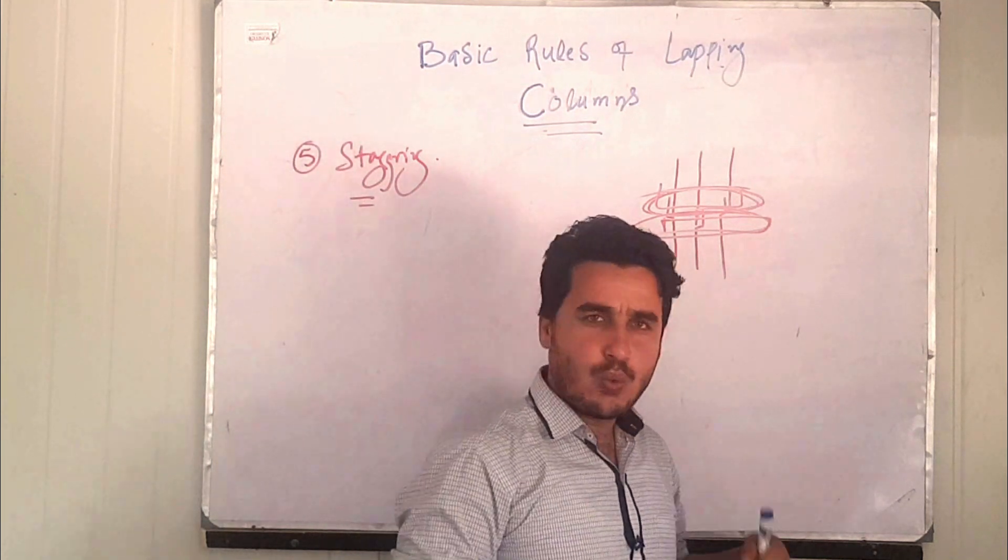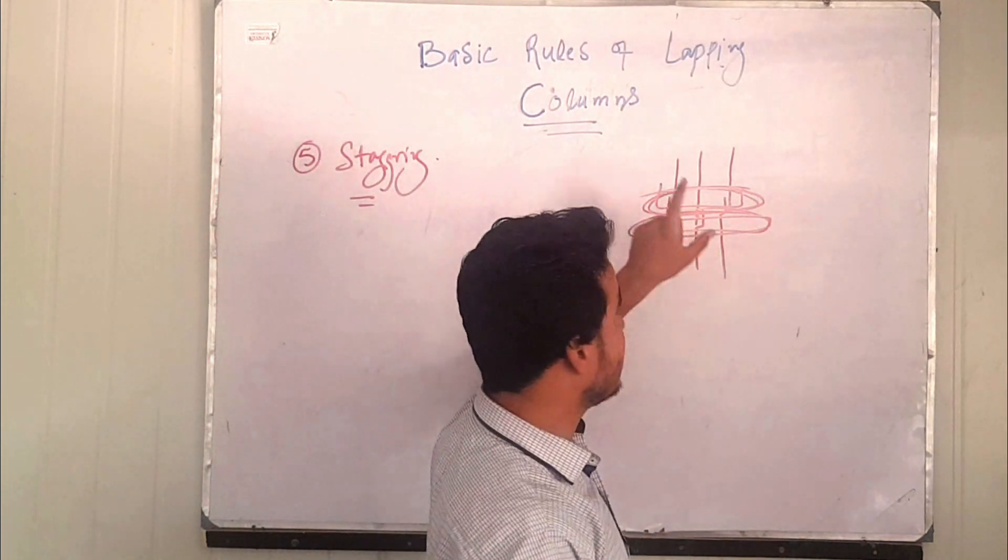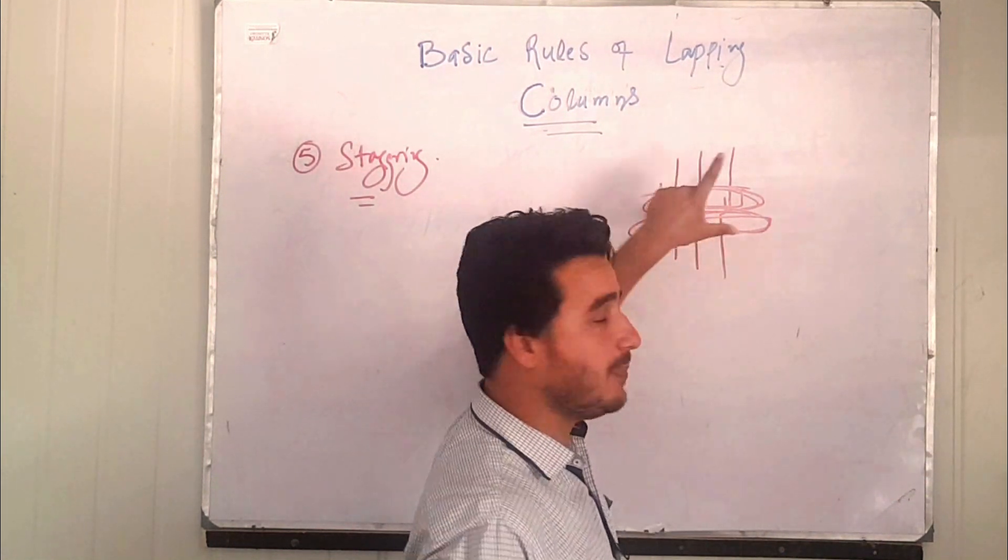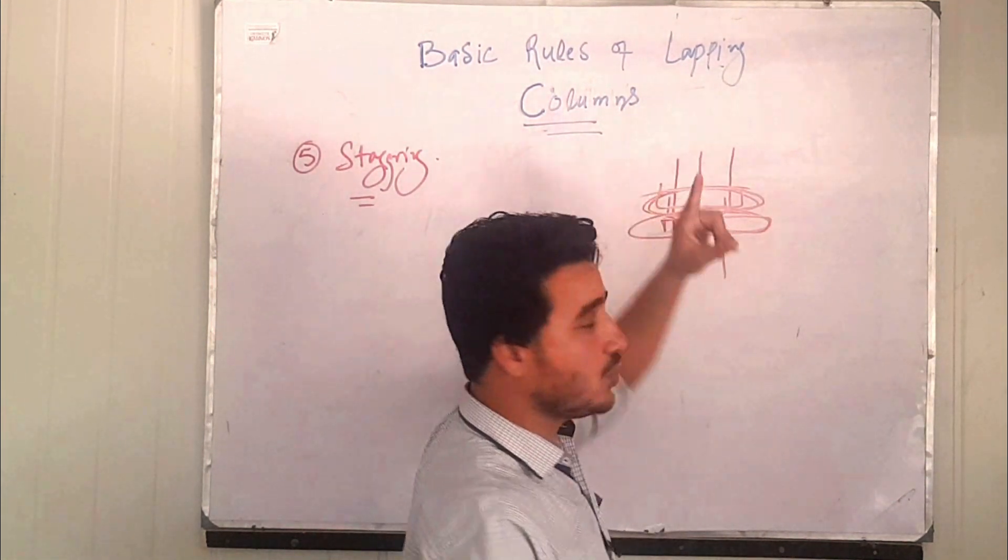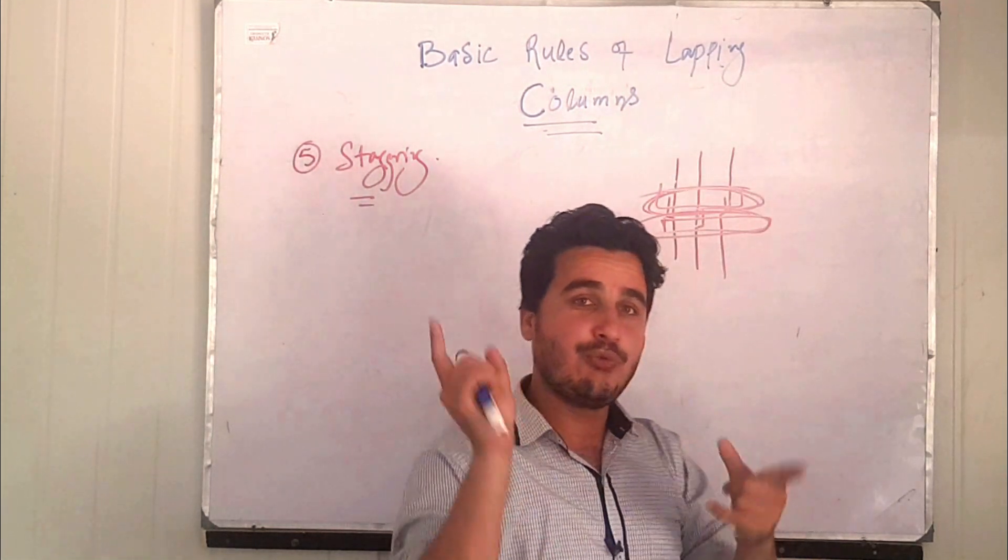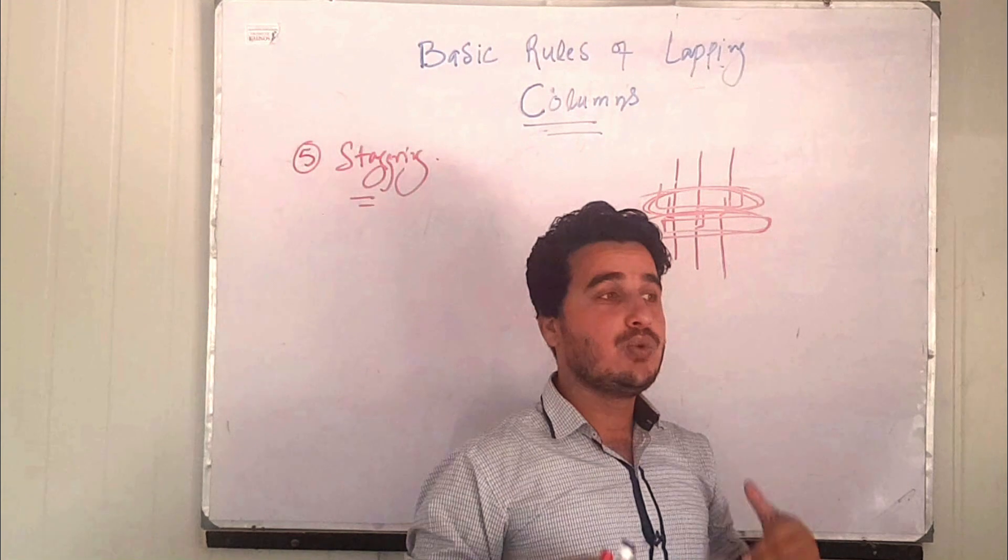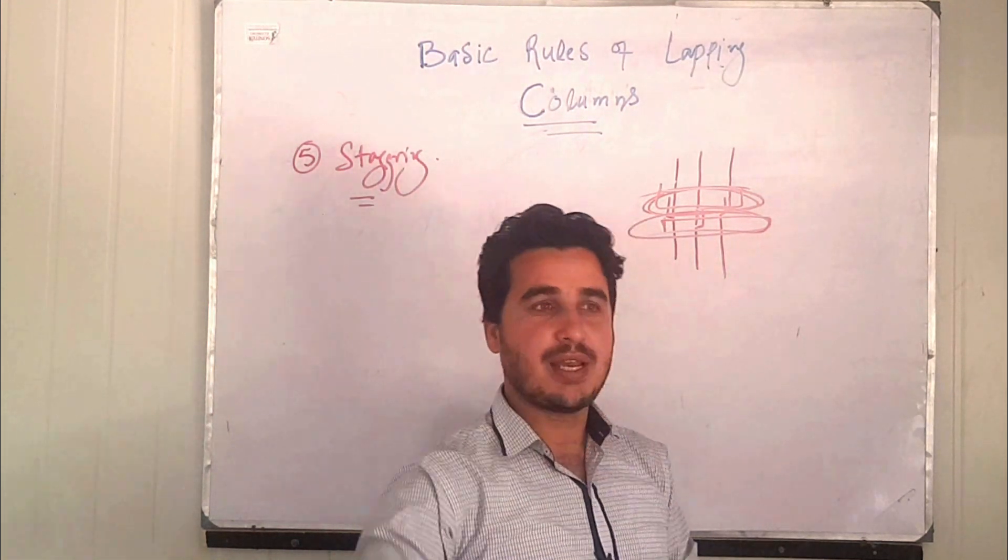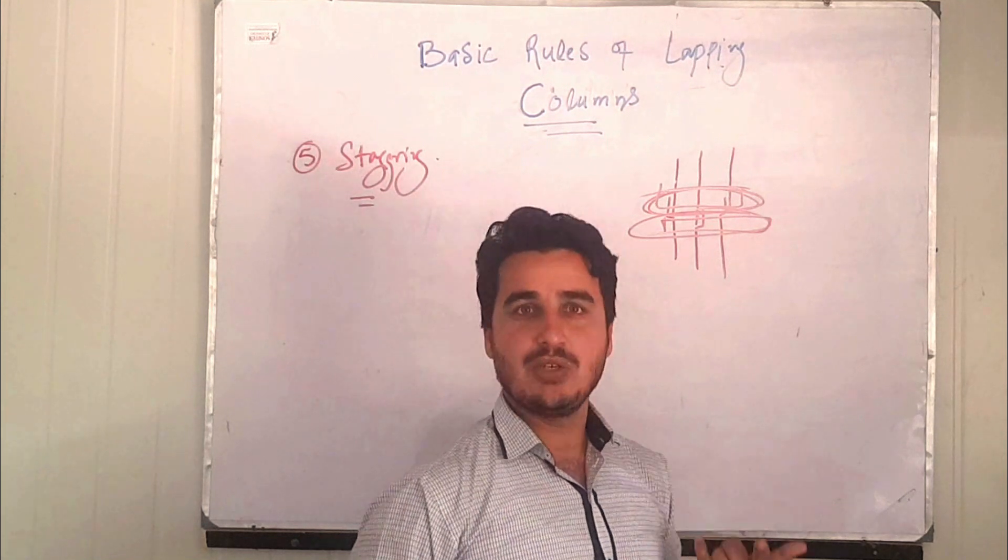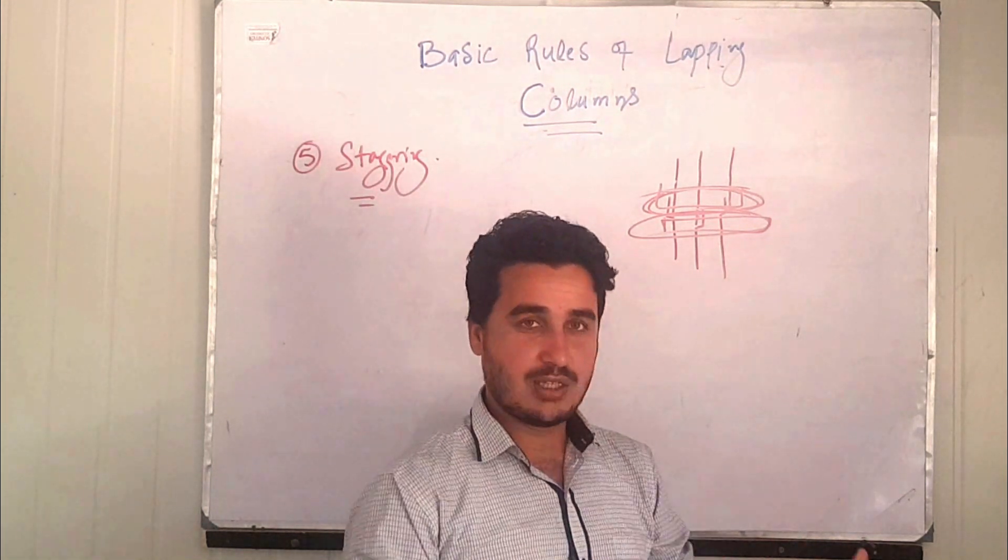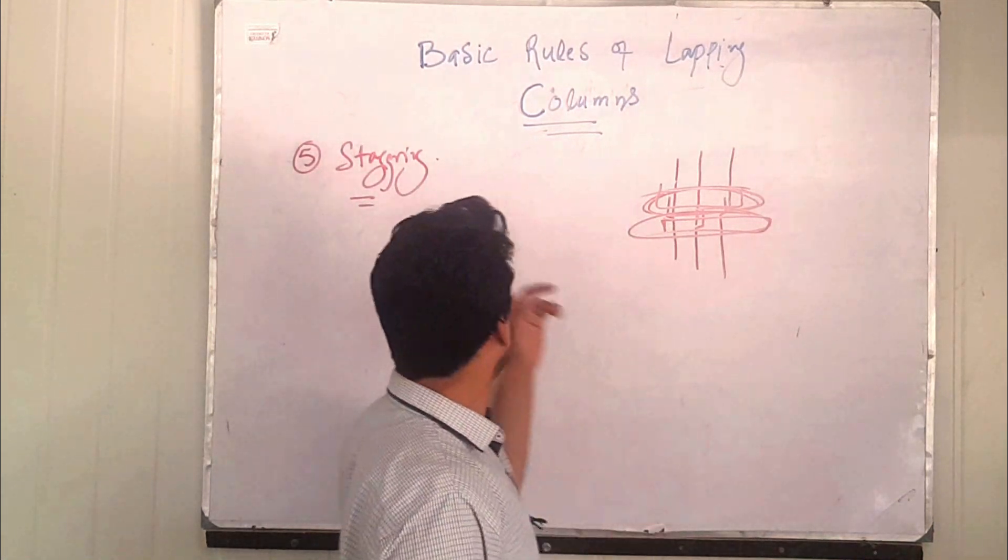Why do we do it? The reason is because lap is a weak zone. This is a real fact that lapping is a weak zone, so you will have to alternate it so that one single area may not get weakened. That is why we use the staggering phenomena in slabs, columns, and beams, even somewhere if we have higher width beams.